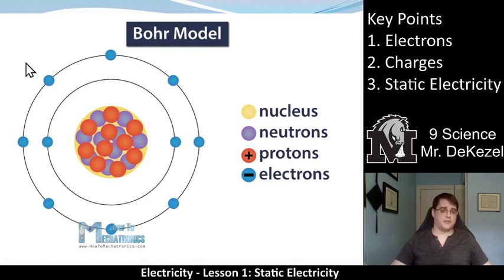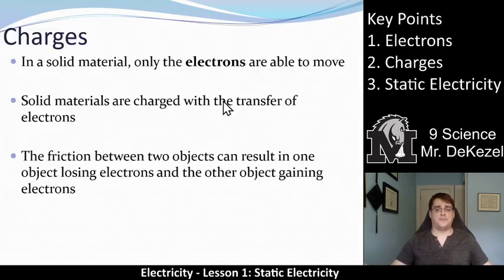Electrons are on the outside, they are the ones that are able to move around, while the protons and the neutrons are stable and immovable on the inside. Solid materials are charged with the transfer of electrons. So when electrons move from one part, one thing to another, one object to another, those objects become charged.